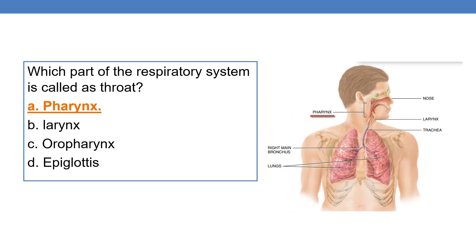Which part of the respiratory system is called the throat? The answer is the pharynx. The pharynx is the part of the respiratory system that is called the throat.